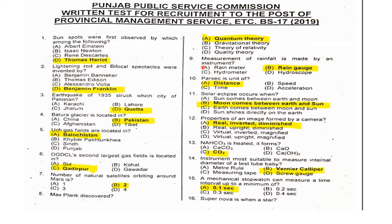Ninth MCQ: Measurement of rainfall is made by which instrument? The name of the instrument is the rain gauge.